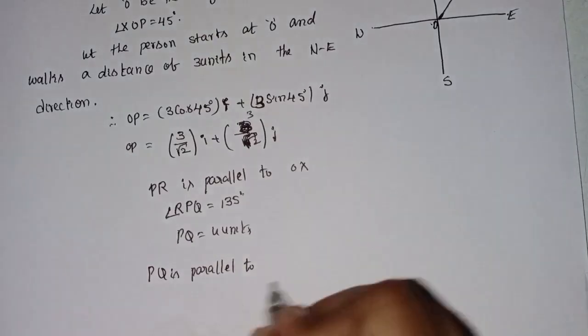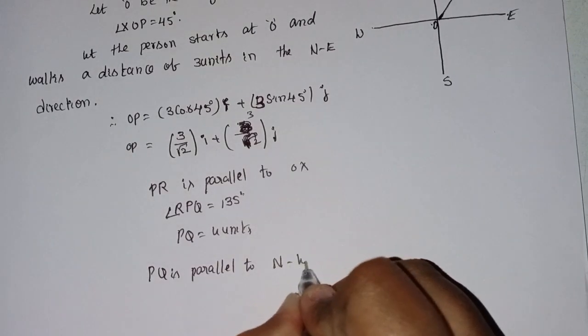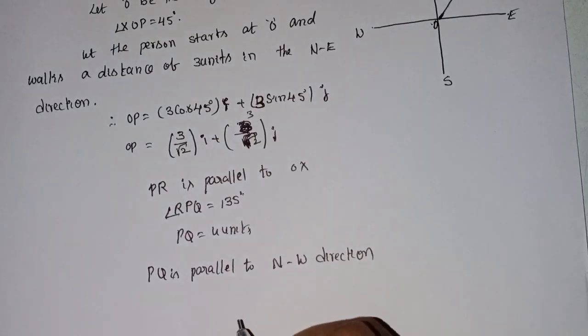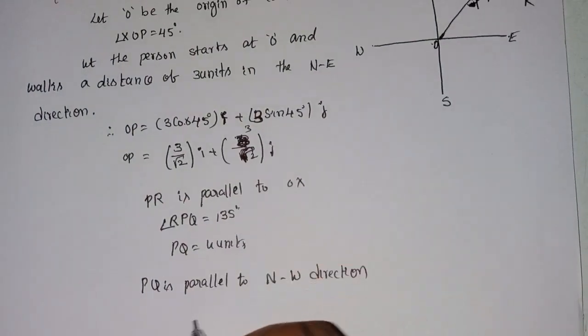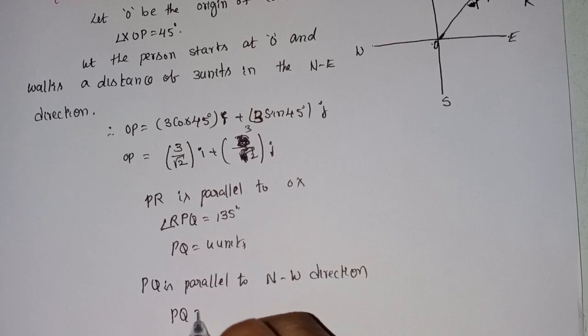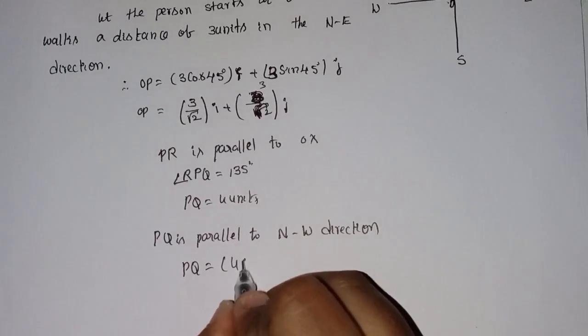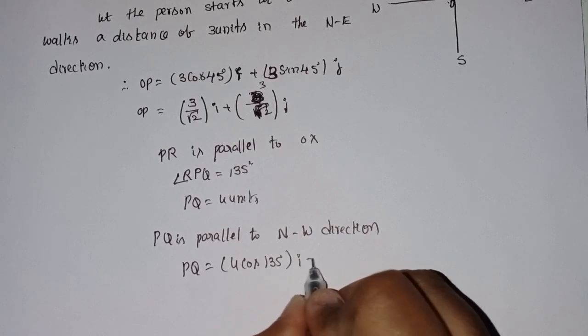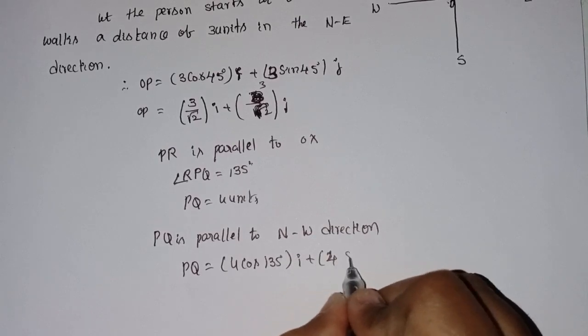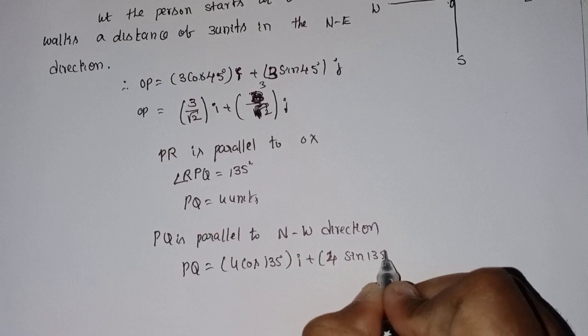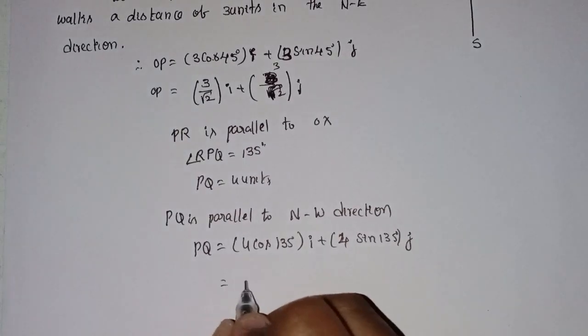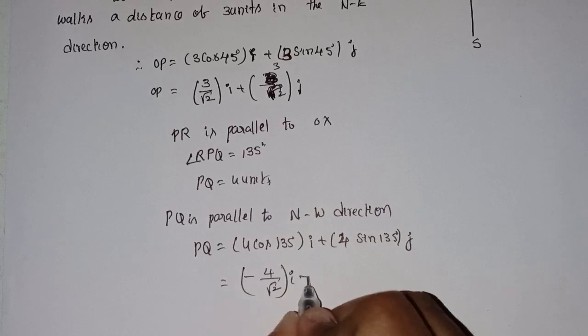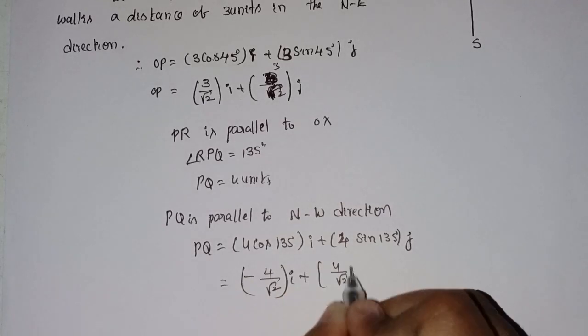PQ equals 4 into cos 135 degrees i plus 4 into sin 135 degrees j. This equals minus 4 by root 2 into i plus 4 by root 2 into j.